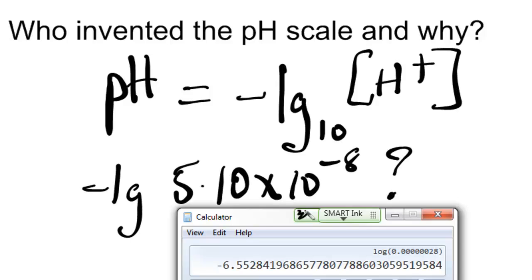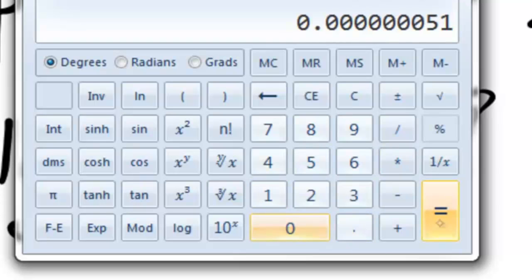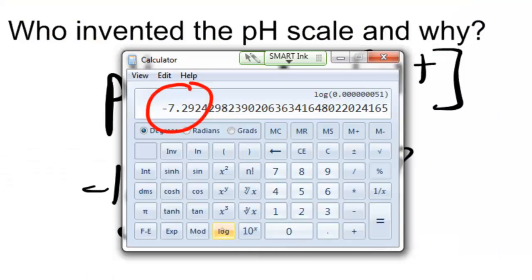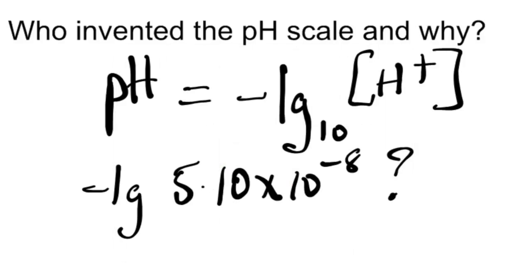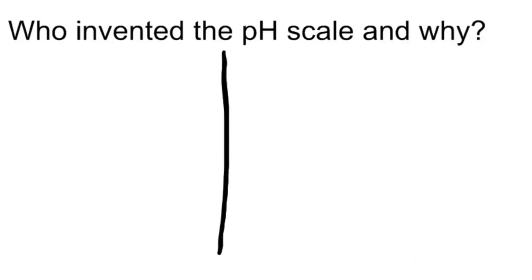If you take the negative log to the base 10 of the hydrogen ion concentration, as in this case, 5.1 by 10 to the minus 8, and you take the negative log of that, it turns out to be minus minus 7.3, which is 7.3, so a much handier number to work with.